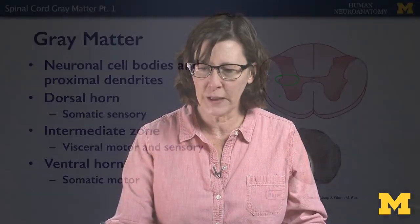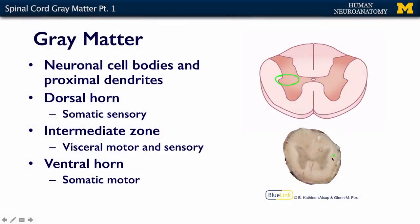Here in our real section of the spinal cord, which is obviously magnified, we can see just a little bit of that intermediate zone, and then we can see our dorsal horn and our ventral horn.